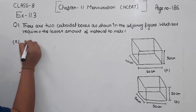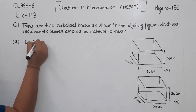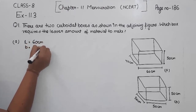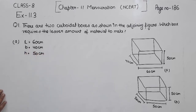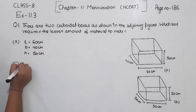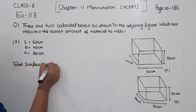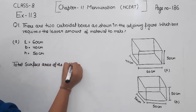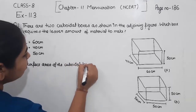For the first one, the length is equal to 60 centimetres, breadth is equal to 40 centimetres, and the height is equal to 50 centimetres. Now we are going to find the total surface area of the cuboidal box.